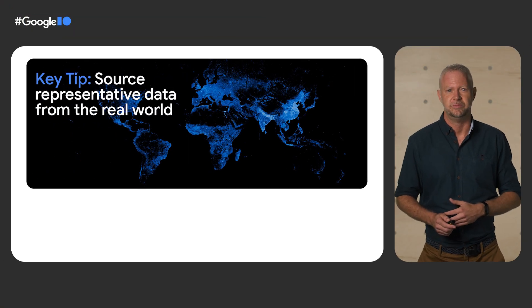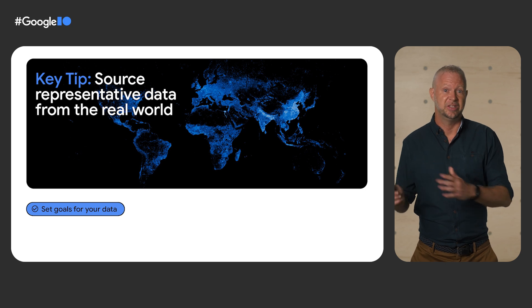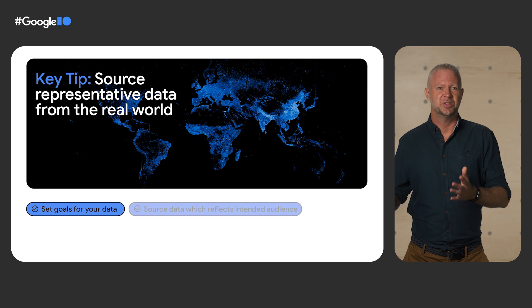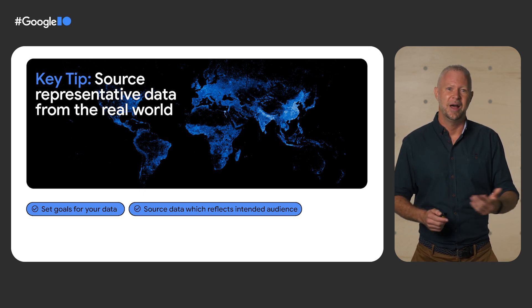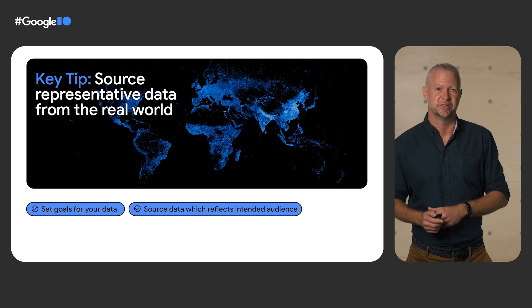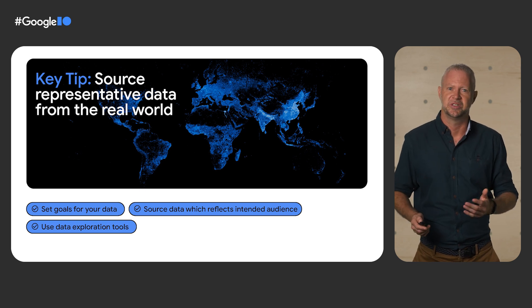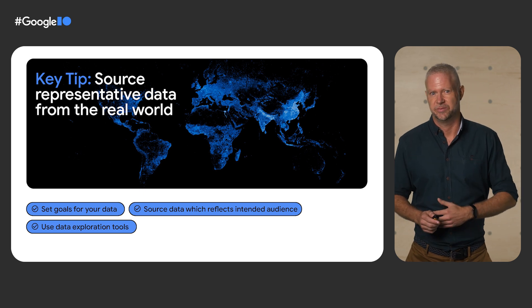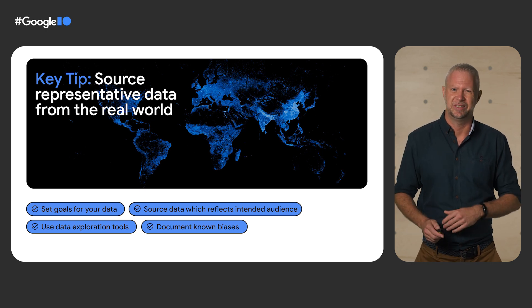After having a solid understanding of the user base, developers should consider the following leading practices to source data that is representative of the real world: Set explicit goals around which region of the world you want your data to represent, and share these goals with your project team. Source data directly from the respective region or audience that you intend to serve so that your model and product better understand and reflect local nuances. Once you've collected your data, use exploration and visualization tools — such as Google's Know Your Data — to check for biases. And if you do find biases, make sure to document them so that they don't cause nasty surprises for your end users.